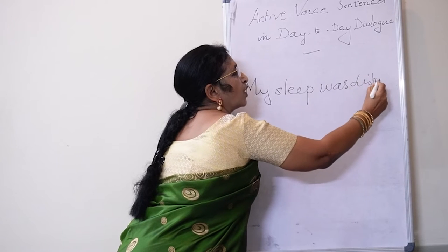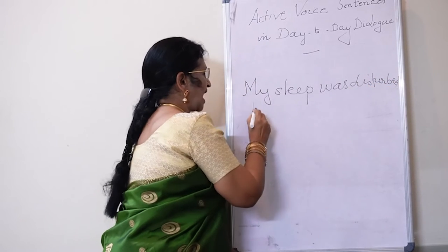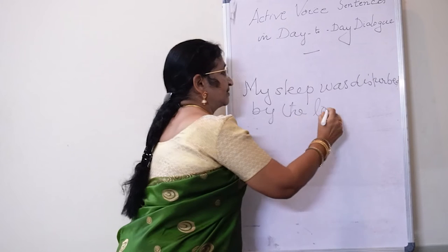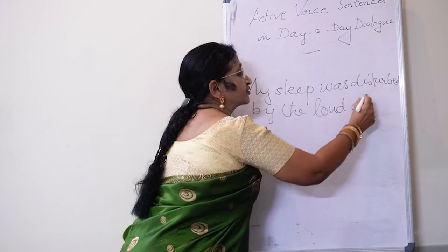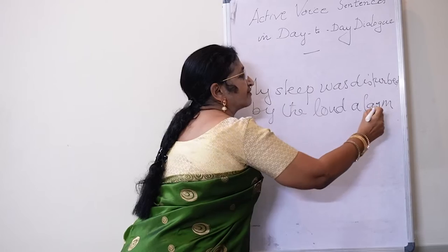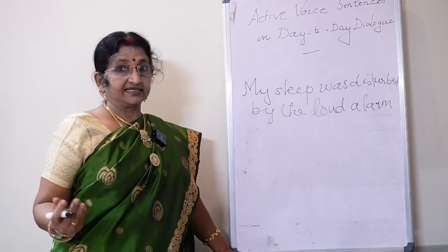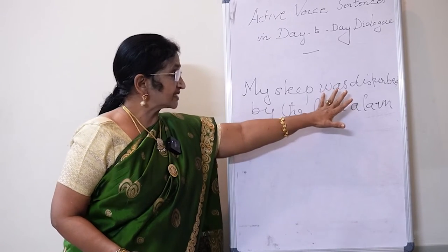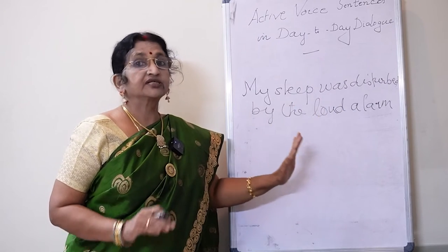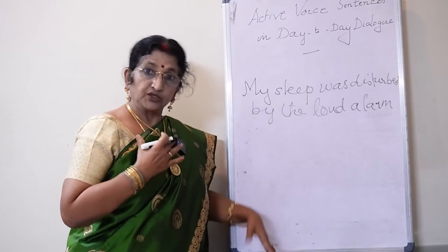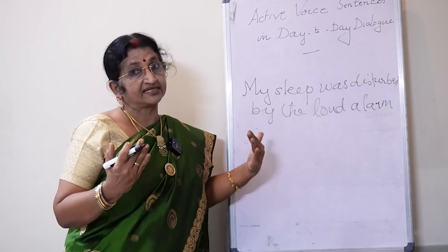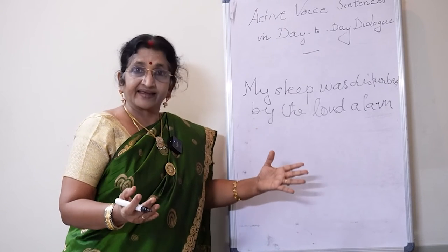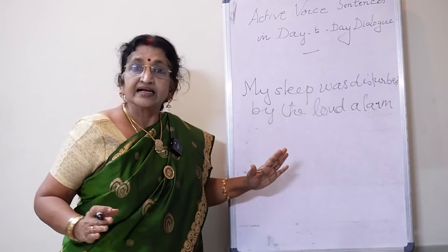My sleep was disturbed by the loud alarm. Usually we use only active voice sentences. When we keep an alarm on our clock or mobile, we are disturbed — so 'My sleep was disturbed by the loud alarm' is simple past tense passive. The active voice version is: 'The loud alarm disturbed my sleep.' We can also say my sleep was very much disturbed and I got angry — that is an ordinary active voice sentence.